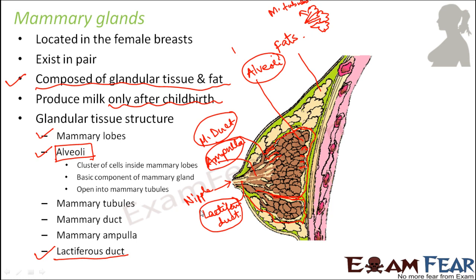The glandular tissue of each breast is divided into around 15 to 20 mammary lobes. Regarding the ducts, the lower you go the wider the ducts are — mammary tubules are extremely thin, mammary ducts are a little wider, mammary ampullae are even wider, and finally the lactiferous duct is the widest of all. Milk is sucked out through the lactiferous duct when a baby feeds — the baby sucks through the nipple and milk comes out through the lactiferous duct.